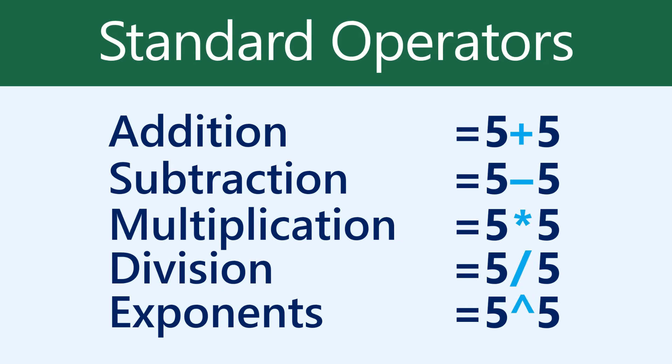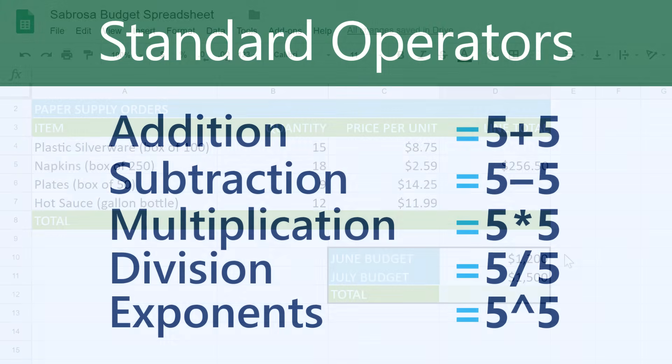You're probably used to seeing equations like 5 plus 5 equals, but in Google Sheets the equal sign comes first. That's because the cell itself contains, or is equal to, the formula and its value.